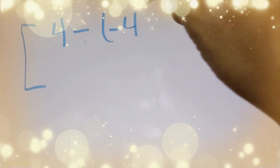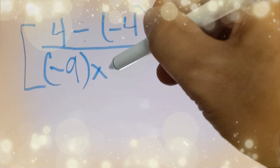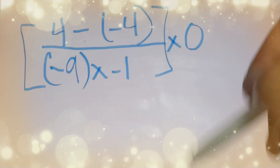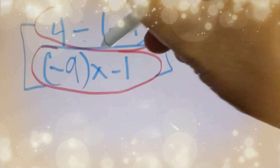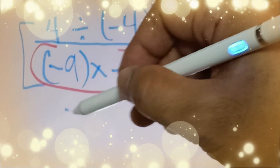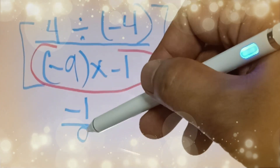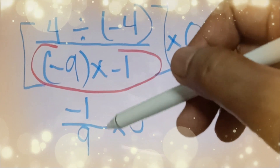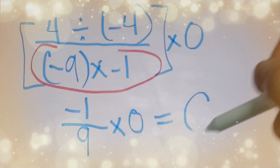For the last example: 4 divided by negative 4, over negative 9, times negative 1, all multiplied by 0. We simplify: 4 divided by negative 4 is negative 1. Over negative 9 times negative 1 gives positive 9. Then negative 1 over 9, the whole thing multiplied by 0, gives an answer of 0.